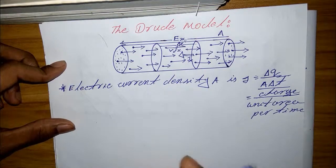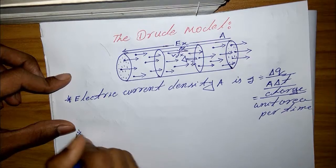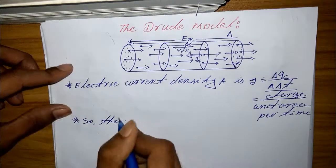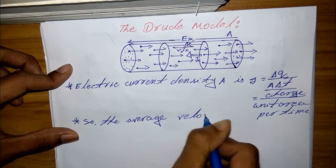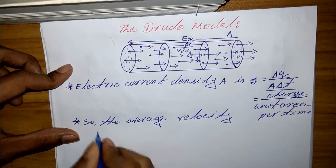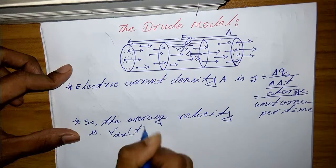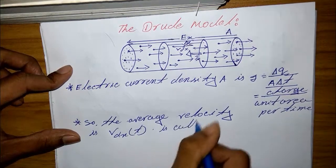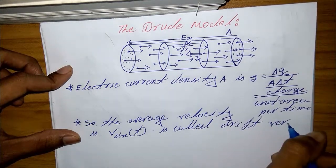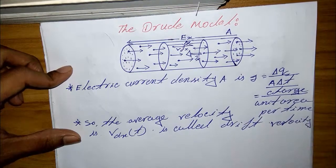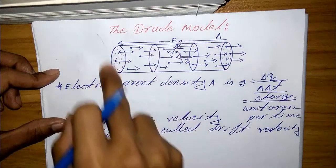The average velocity in x direction, or x, so the average velocity v_dx, you can write it v_dx is called drift velocity. Average velocity, that means the average velocity is the drift velocity of this Drude model.